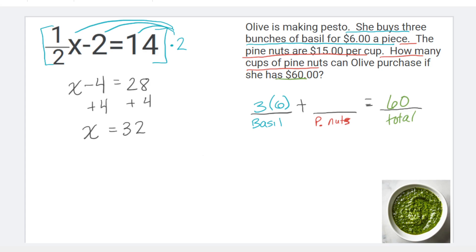Now, looking at this structure, I have a quantity times money. So here I should also have a quantity times money. I don't know how many pine nuts we have. How many cups of pine nuts can olive purchase? That gives us a variable for x. But we are going to times that by the $15 because it's $15 per cup.